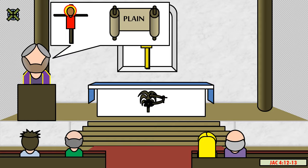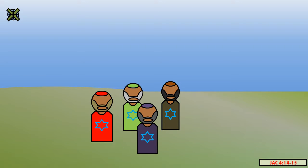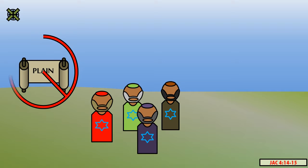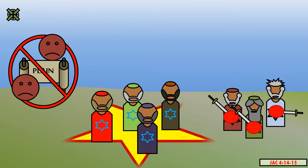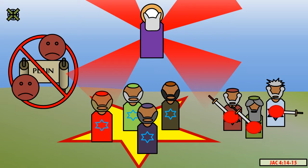But behold, the Jews were a stiff-necked people, and they despised the words of plainness, and killed the prophets, and sought for things that they could not understand. Wherefore, because of their blindness, which blindness came by looking beyond the mark, they must needs fail. Okay. For God hath taken away his plainness from them, and delivered unto them many things which they cannot understand, because they desired it. And because they desired it, God hath done it, that they may stumble. Wow.